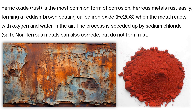Ferric oxide is the most common form of corrosion. Ferrous metals rust easily, forming a reddish-brown coating called iron oxide when the metal reacts with oxygen and water in the air. The process is speeded up by sodium chloride — salt. Non-ferrous metals can also corrode, but do not form rust.